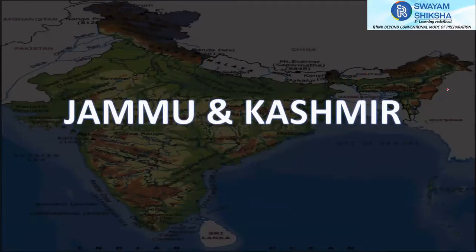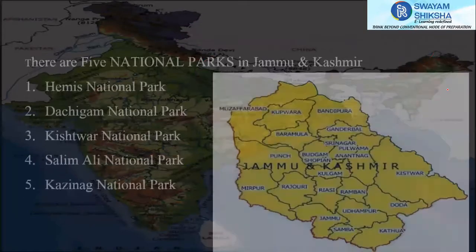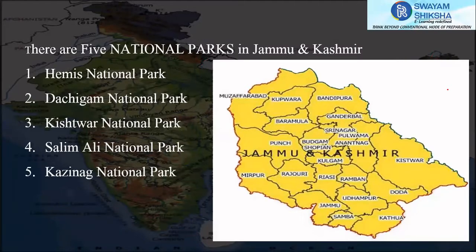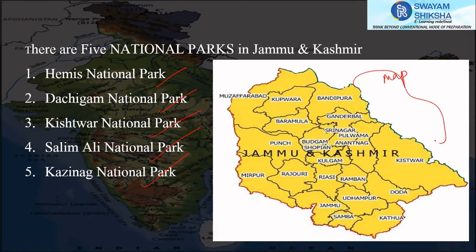Today I'm going to discuss Jammu and Kashmir's national parks. There are five national parks under the state of Jammu and Kashmir: Hemis National Park, Dachigam, Kishtwar, Salim Ali National Park, and Kajinag National Park. This is the newly formed Jammu and Kashmir map where Ladakh has been separated.